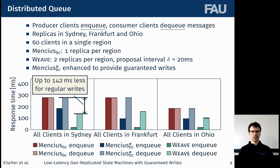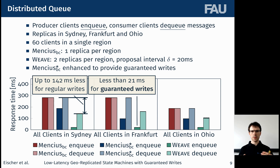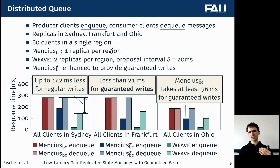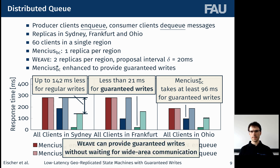Looking at the clients in Sydney, we see that Weave for regular writes basically only takes half the response time as Mencius. This is a consequence of differences in how the group coordination works — Mencius requires a full network round trip, whereas Weave just has to wait for the in-flight proposals to arrive. For guaranteed writes, Weave is able to consistently provide low response times of less than 21 milliseconds, whereas Mencius Star, which benefits somewhat from guaranteed writes, still takes roughly 100 milliseconds or more. In summary, Weave can provide guaranteed writes without having to wait for wide-area communication.